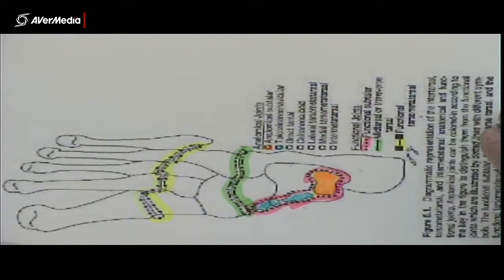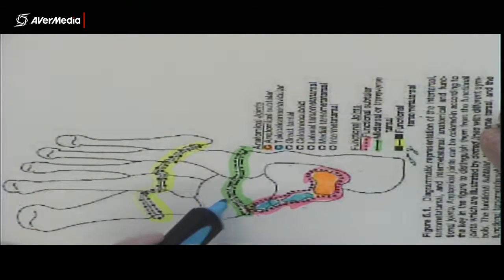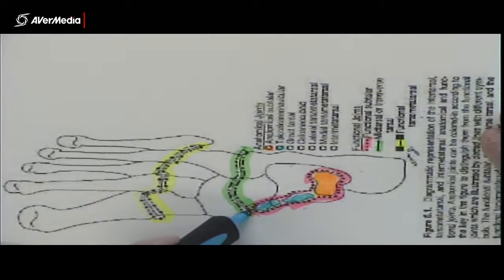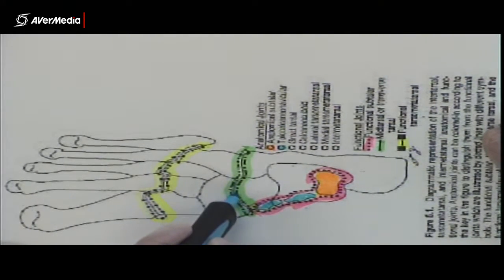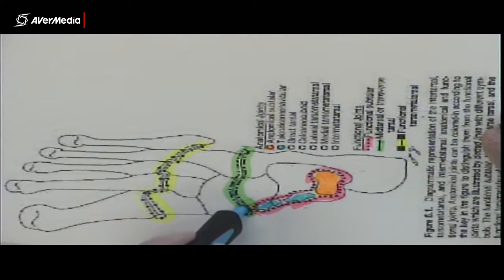Now where else is the talo calcaneo navicular joint? Where does it go? Yeah, it runs in here in between the talus and the navicular. This is the more vertical part of the joint. So on here it's just a thin line. But there it is there.